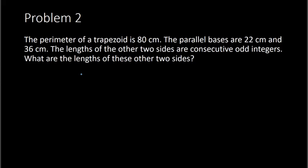Problem 2 involves some geometry. We are told that the perimeter of a trapezoid is 80 centimeters. The parallel bases are 22 centimeters and 36 centimeters. The lengths of the other two sides are consecutive odd integers. What are the lengths of these other two sides? First we need to know what a trapezoid is — a trapezoid is a shape with just one set of parallel sides. It's a quadrilateral, four sides, where just the top and the bottom are parallel. So this would be an example of a trapezoid.